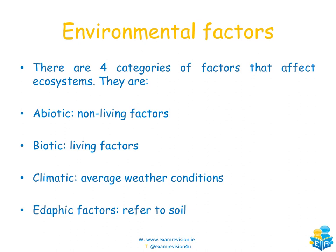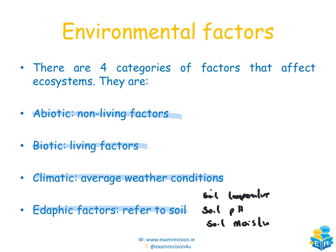The environment encompasses all external factors, and there are four categories of factors that can affect ecosystems. Abiotic factors are the non-living factors. Biotic factors are the living factors. Climatic factors are the average weather conditions — anything associated with weather falls under climatic factors. Edaphic factors refer to the soil, including soil temperature, soil pH, and soil moisture.